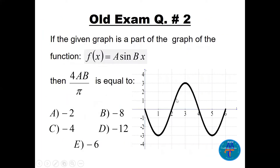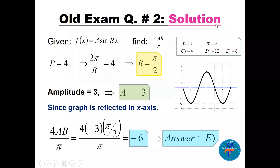Question number two: we have the graph of a·sin(bx). Find 4ab/π. From the graph the period is 4, and using the formula period = 2π/b, we get b = π/2. The amplitude is 3, but since there's a reflection on the graph, a = −3. So 4·(−3)·(π/2) divided by π gives −6. The answer is −6.